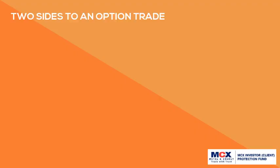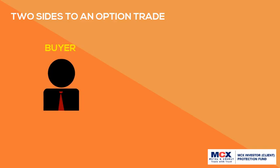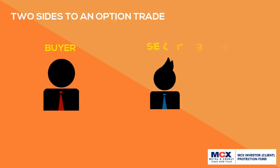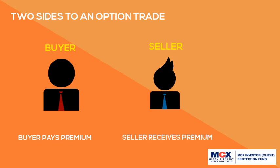There are two sides to an option trade: the buyer and the seller. The buyer pays the premium to buy the right to buy or sell. The seller receives the premium to sell the right and is obligated to sell or buy if exercised. The buyer is known as the option holder; the seller is known as the option writer.